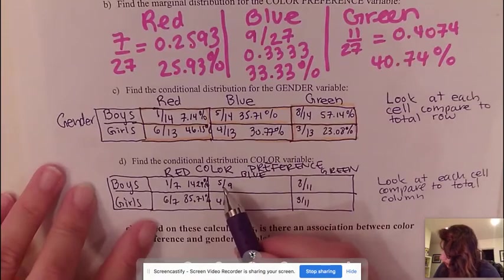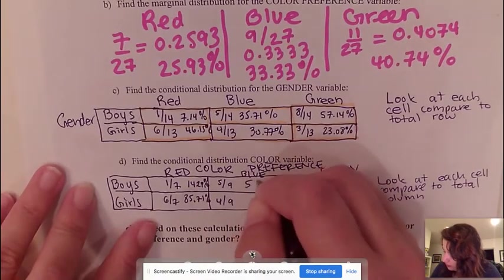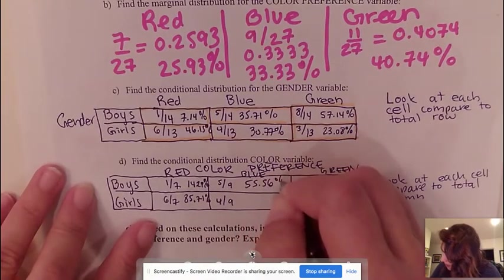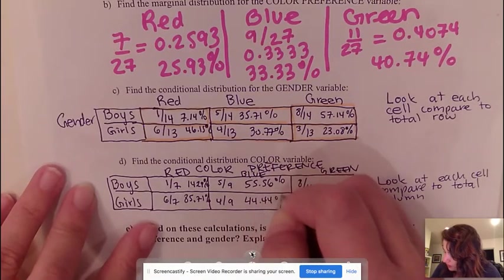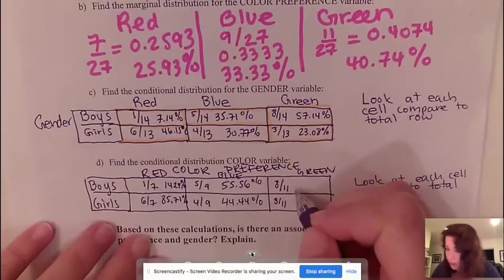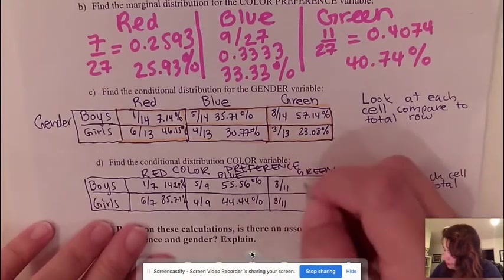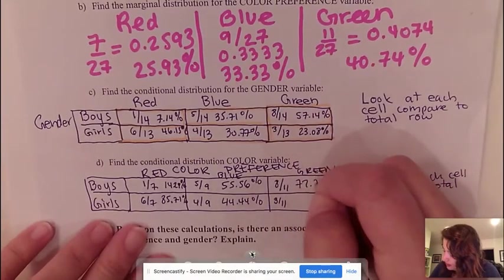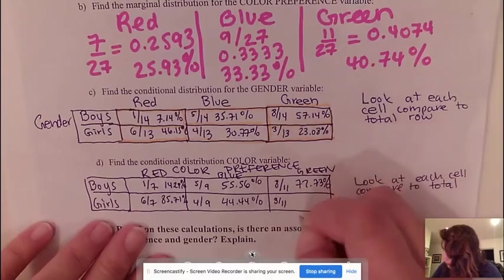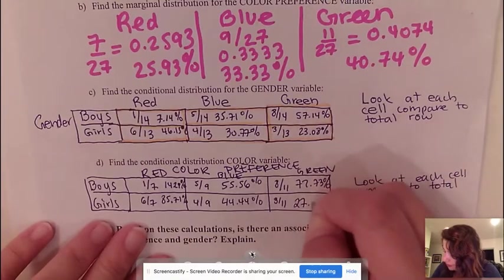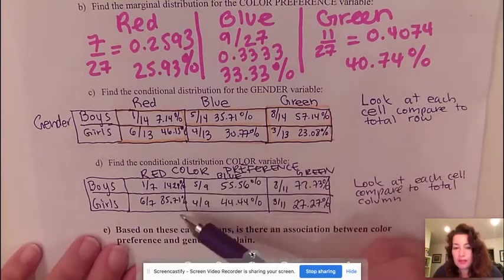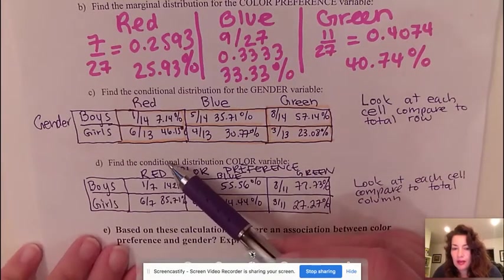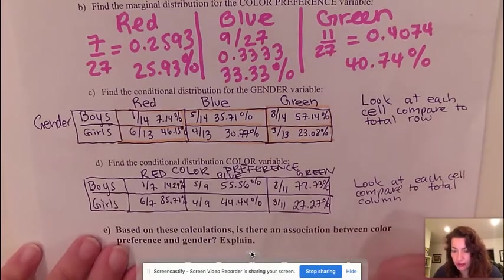So 5 out of 9 is 55.56%, and this would give us 44.44%. And converting this to percentage is 72.73% and 27.27%. So this completes the conditional distribution for the color variable.